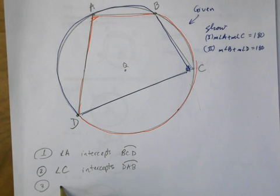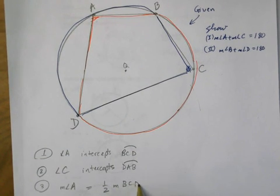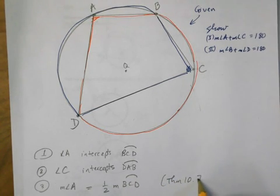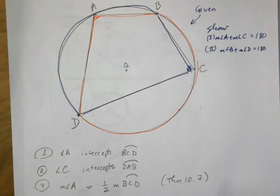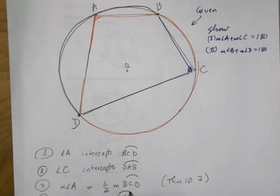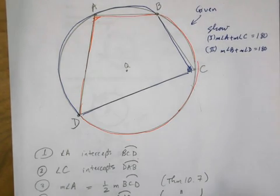Now, from what we know previously, the measure of angle A is equal to one half the measure of arc BCD, and this was Theorem 10.7. So A intercepts BCD, so A is equal to one half of BCD. And similarly, C is equal to one half of DAB by very much the same reason.